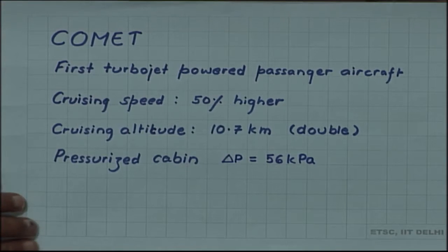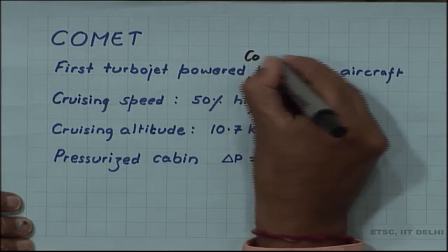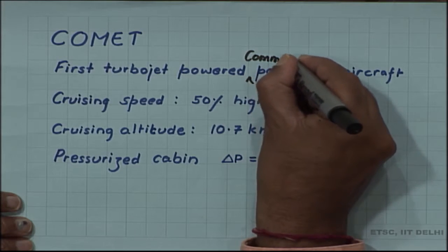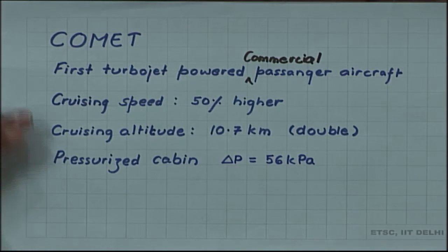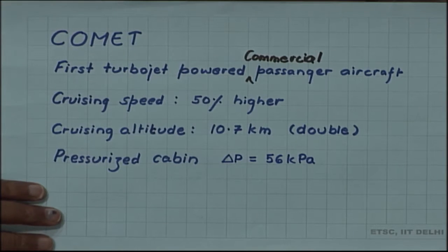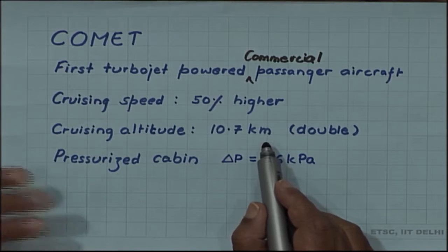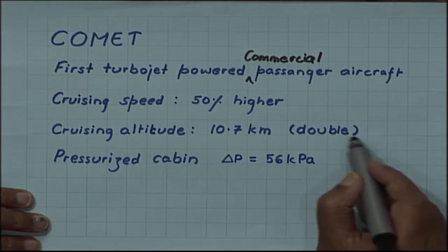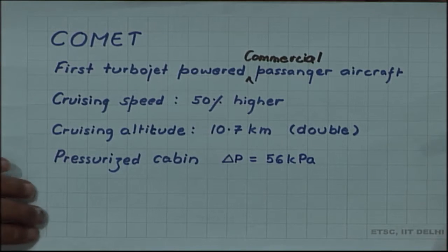Comet was the first turbo-powered commercial passenger aircraft. Its cruising speed was supposed to be 50 percent higher than other aircraft operating at that time, and its cruising altitude was 10.7 kilometers, higher than Mount Everest, which was double the aircraft operating at that time.